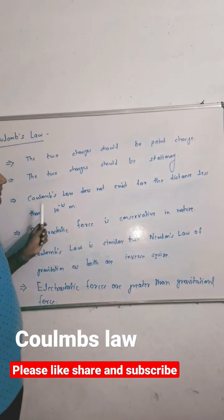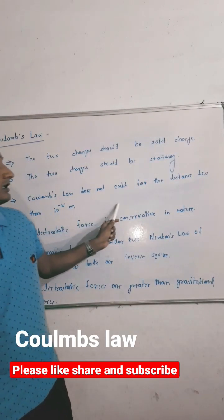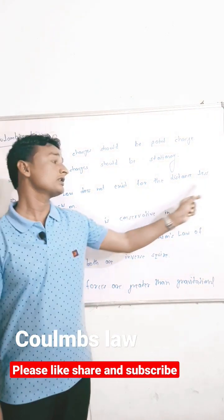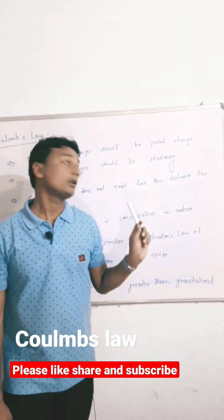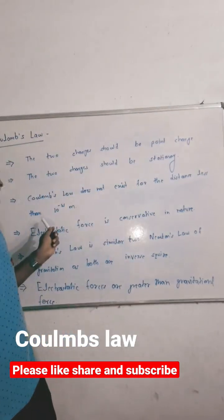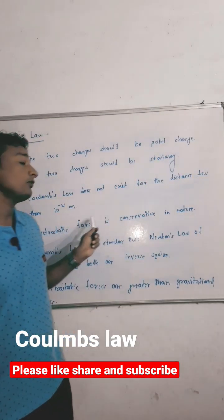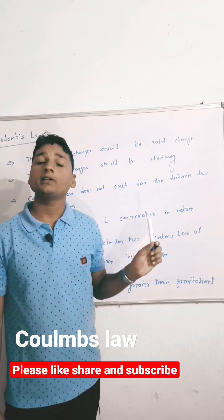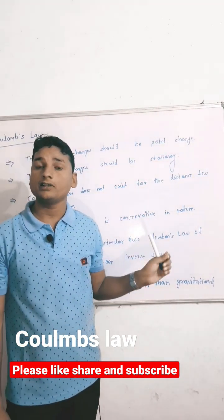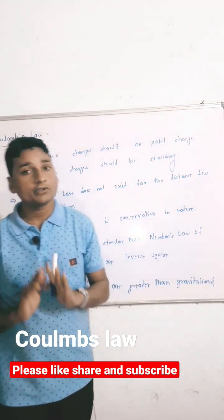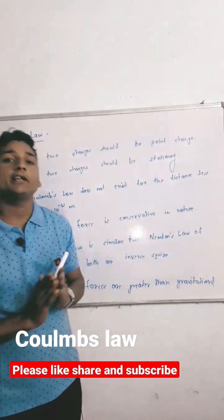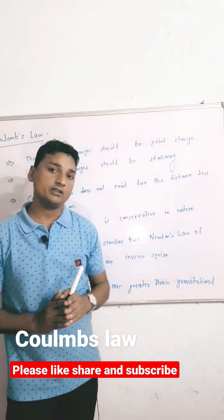The third condition is that Coulomb's law does not hold for distances less than 10 to the power minus 15 meters, that is, the nuclear distance. So Coulomb's law is not valid for nuclear distances.